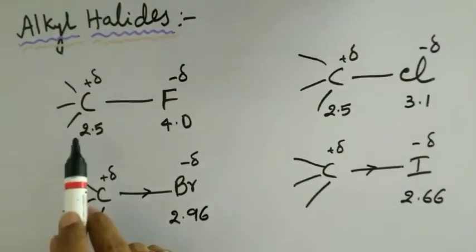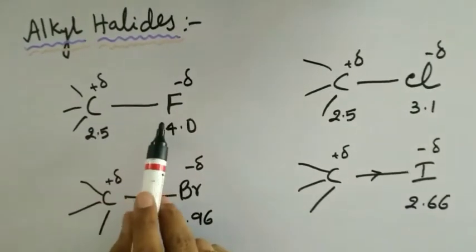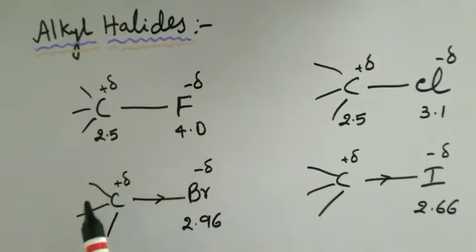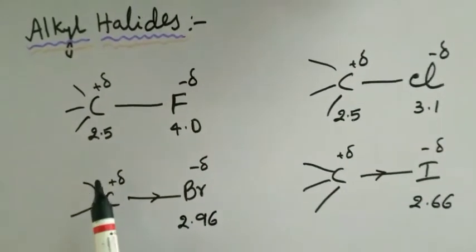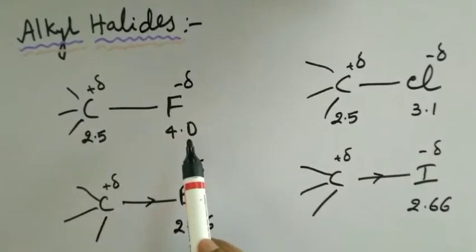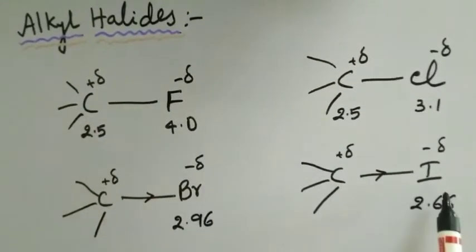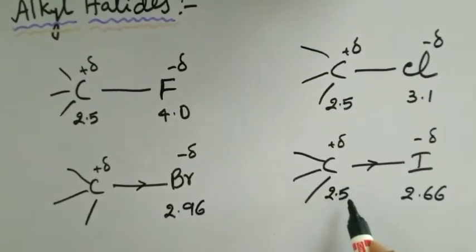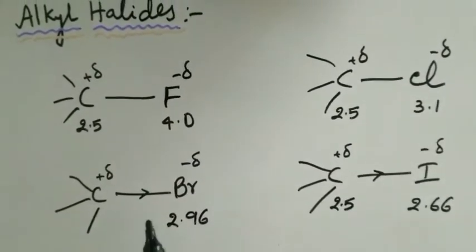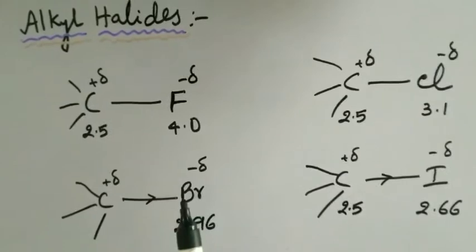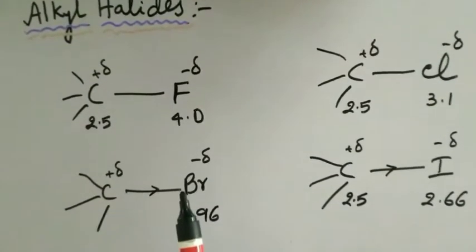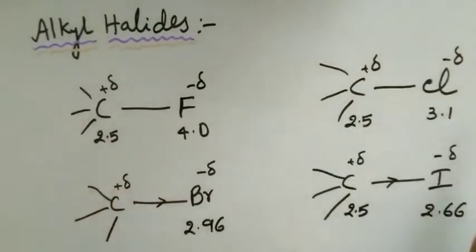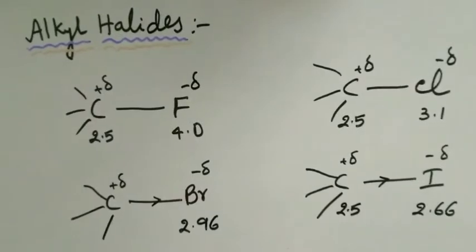In alkyl halides, the carbon-halogen bond is a polar bond because of the electronegativity difference between carbon and the halogen atom. Carbon has only 2.5 electronegativity units, whereas halogen electronegativity decreases as we move from fluorine to iodine. However, even iodine has more electronegativity compared to carbon. Therefore, in alkyl halides, the halogen atom bears partial negative charge and the carbon atom bears partial positive charge, making the carbon-halogen bond more polar. These alkyl halides will prefer to undergo nucleophilic substitution reactions.